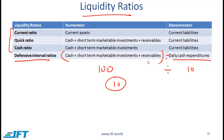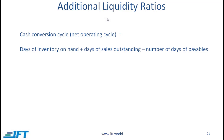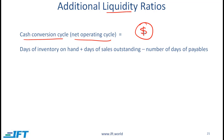Some interpretation and judgment can come in. If you believe that receivables are not very liquid, then it might make sense to remove your receivables number when coming up with the defensive interval ratio. We can also evaluate the liquidity of a company by looking at the cash conversion cycle, which is also called the net operating cycle. This essentially measures the time between when a company spends money on inventory till the time that the company receives money on the sales that it makes.